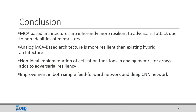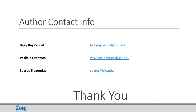To conclude, MCA based architectures are inherently more resilient to adversarial attacks due to non-idealities of memristors. Even fully analog MCA based architectures are more resilient than hybrid MCA based architectures. Non-ideal implementation of activation functions plays a major role in improving accuracy. This improvement is observed in both simple feed-forward networks and deep convolutional neural networks. Thank you for listening — for any questions or queries, our contact information is provided.